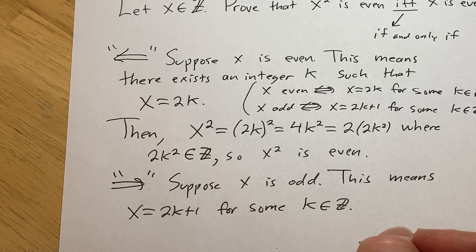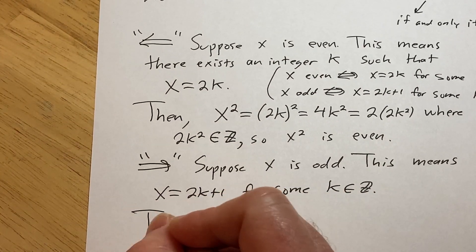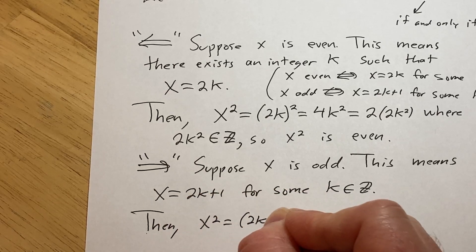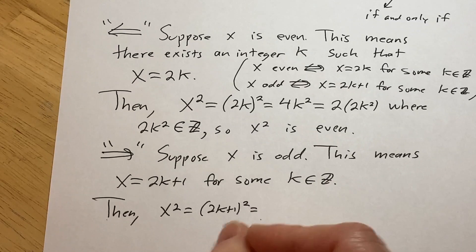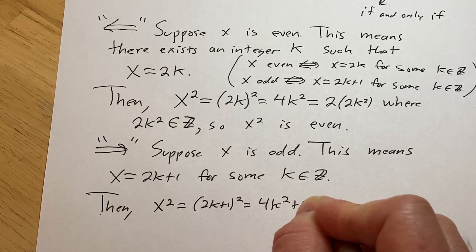And now we simply have to look at x squared, just like we did before. So then, x squared is equal to, well, you just square this quantity, and you can multiply this out. This would just be 4k squared plus 4k plus 1.